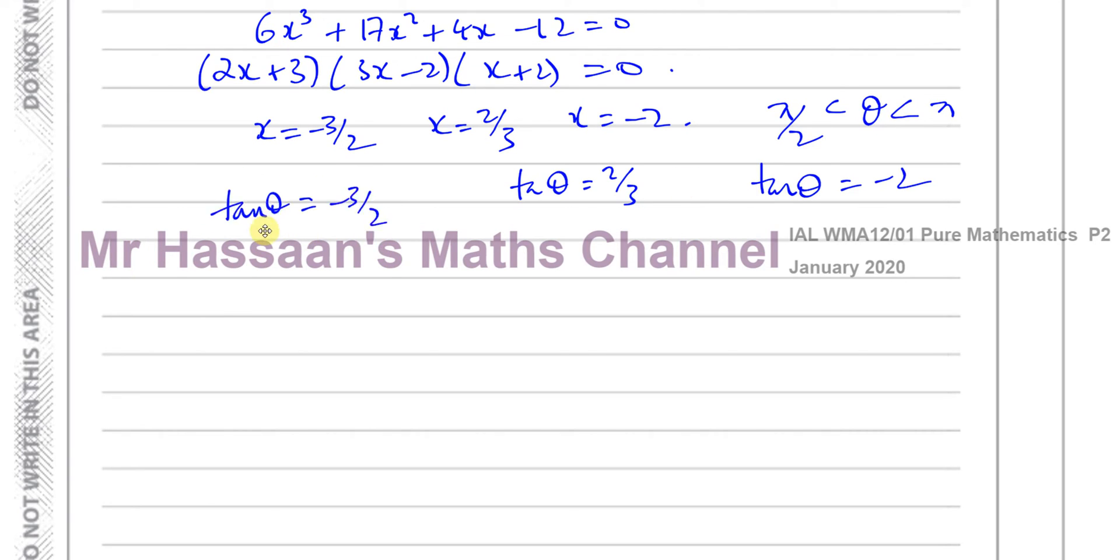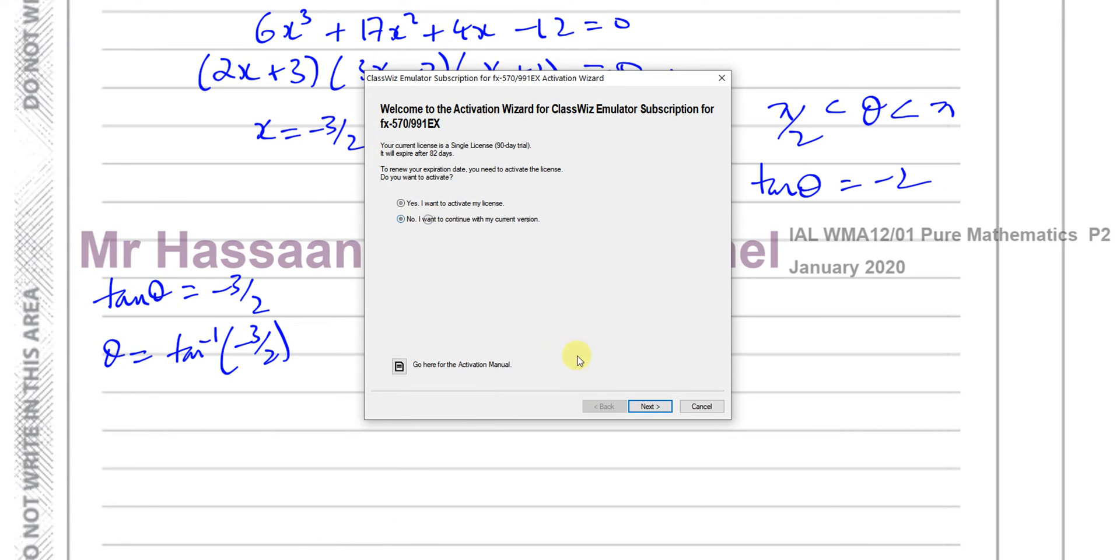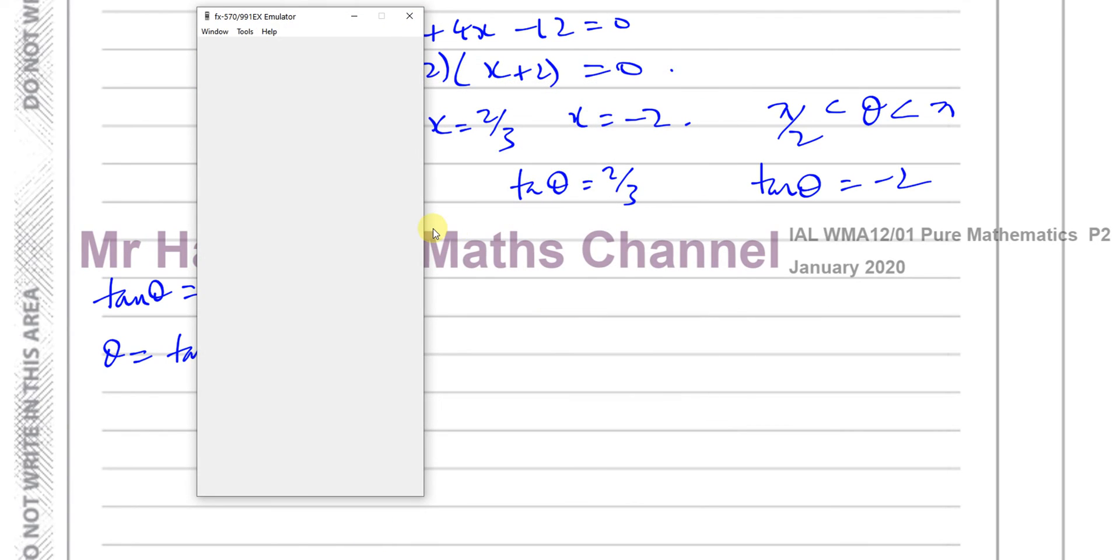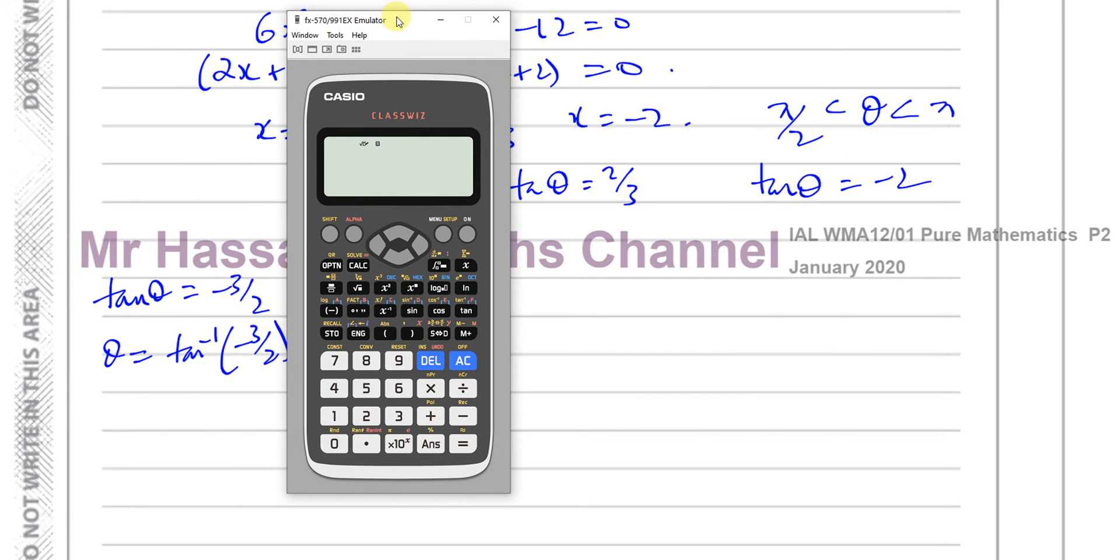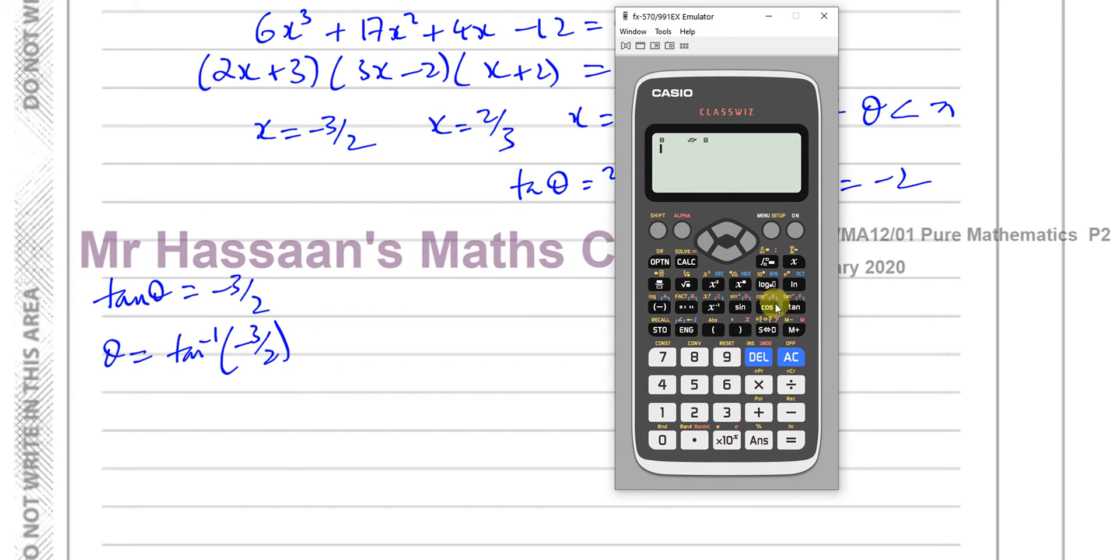We're going to solve this equation for these three, so we've got tan theta equals minus 3 over 2. Let's deal with that one. Now if I press inverse tan of minus 3 over 2, it's going to give me an answer which is—inverse tan of minus 3 over 2—that's going to give me a negative answer because we know that tan is positive